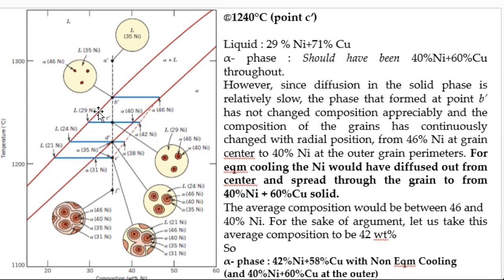From the phase diagram, the alpha phase should have 40% nickel and 60% copper throughout the grain. But since cooling rates are very fast and diffusion is not taking place properly, the nickel atoms do not get a chance to diffuse throughout the grain.